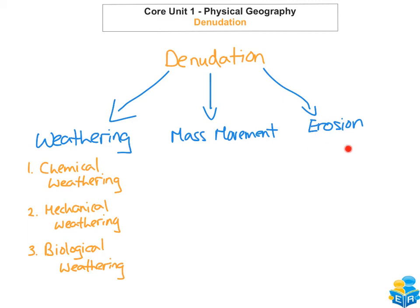One thing to note is that for erosion there are four main agents or causes that actually move the material: moving rivers, moving waves in the sea, moving ice, and moving air with the wind.